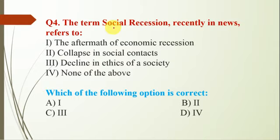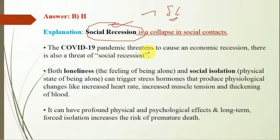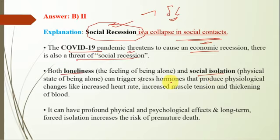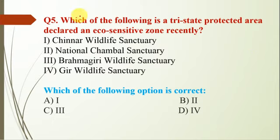Question number 4: the term 'social recession' was recently used. It refers to the collapse of social contact, so option will be B. This term is very important — while most of us know economic recession, we hardly focus on terms like social recession. Last year UPSC asked about social capital, so it might ask about social recession too. Due to the COVID-19 pandemic, there is fear of both economic recession and social recession. Loneliness and social isolation can trigger stress hormones, producing psychological changes with profound physical and psychological effects. Long-term forced isolation also increases the risk of premature death. However, following lockdown guidelines and staying at home remains important.